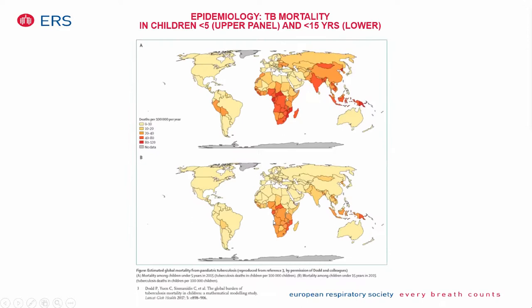Maps showing the problem specifically in children illustrate mortality in young children in the upper panel and mortality in school children and adolescents in the lower panel. Again, the largest numbers are in India, but almost all areas of the African subcontinent are in dark red, partly explained by the co-occurrence of HIV infection.